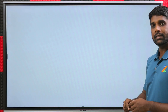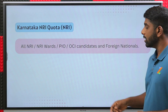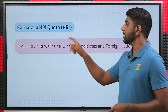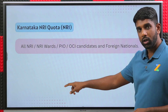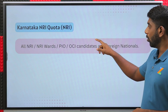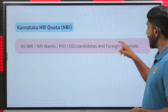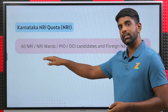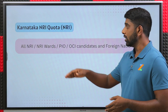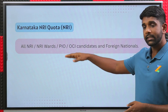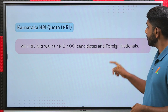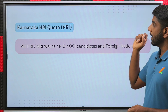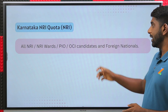Next is the Karnataka NRI quota. For NRI quota, all NRI candidates, NRI sponsored candidates, PIO, OCI candidates, and foreign nationals are eligible. NRI awards refers to NRI sponsored candidates. So NRI candidates, sponsored candidates, PIO, OCI, and foreign nationals are also eligible for the Karnataka NRI quota seats.